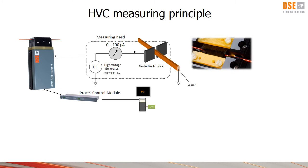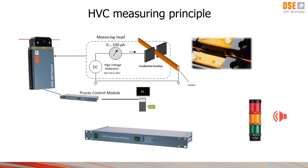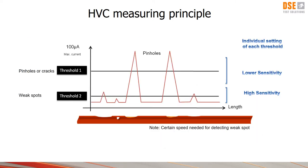The current being measured is sent to the connected processor module. When the error in the insulation is passing the measuring head the processor module is counting and gives an alarm in case the number of errors exceeds the limit being set in the software. This figure shows what happens with the current flowing in the brushes to ground. When the insulation is okay no current is flowing. At the moment an error such as a crack or pinhole appears, the current goes to its maximum.